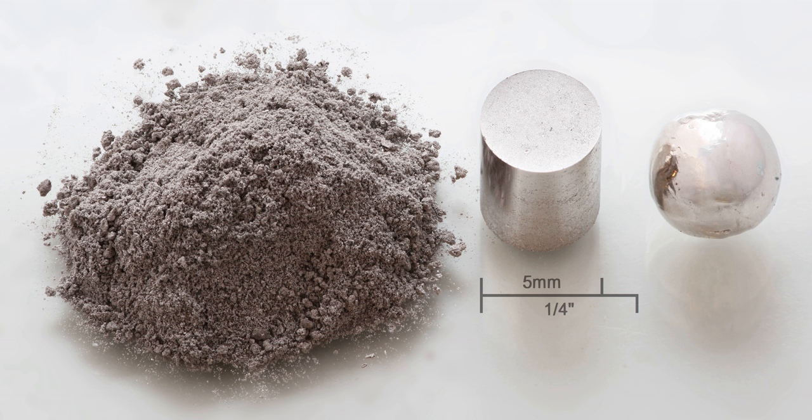Rhodium is found in platinum or nickel ores together with the other members of the platinum group metals. It was discovered in 1803 by William Hyde Wollaston in one such ore, and named for the rose color of one of its chlorine compounds, produced after it reacted with the powerful acid mixture aqua regia.